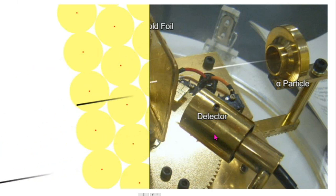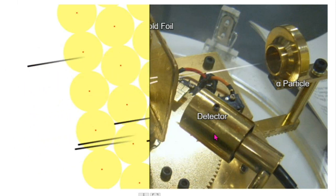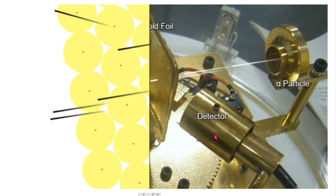Most of the alpha particles passed straight through the gold foil without being deflected, indicating that the atom is mostly empty space. Some alpha particles were deflected at various angles, which suggested the existence of a small, positively charged nucleus in the atom.